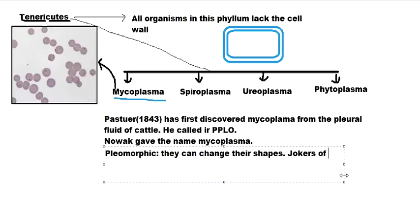Due to this observation, they are also called the 'jokers of microbiology.' They have mesosomes in their cell membrane, which is expected. As mentioned in the video on bacterial structure, people used to think mesosomes help in cell division and splitting of genetic material.